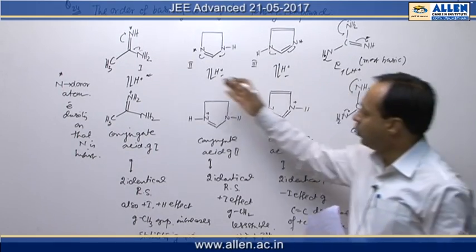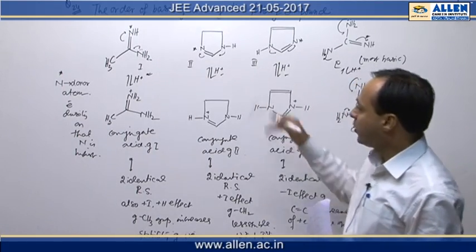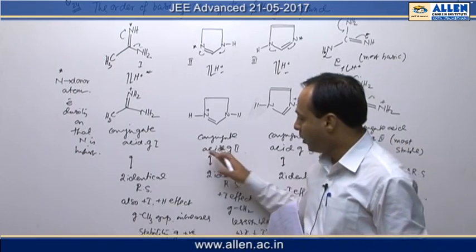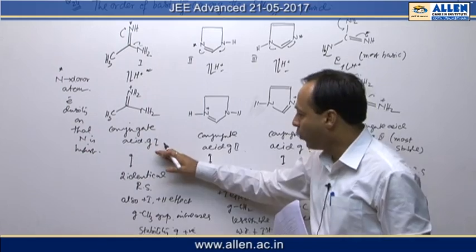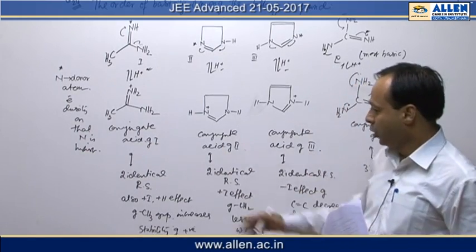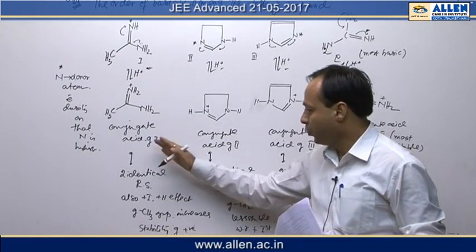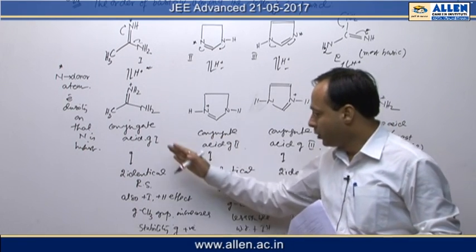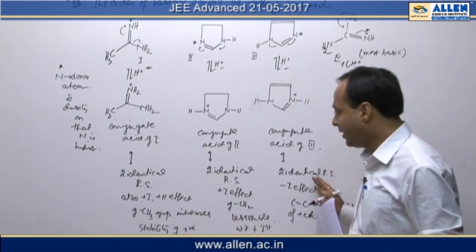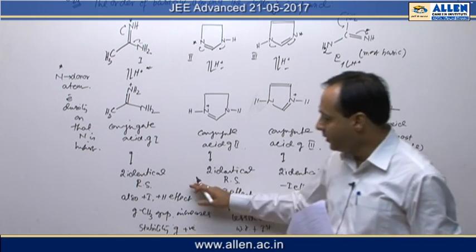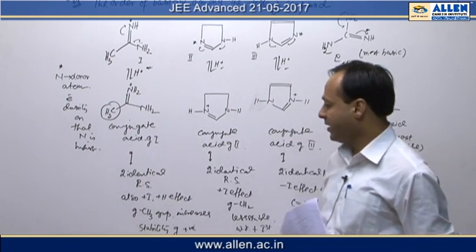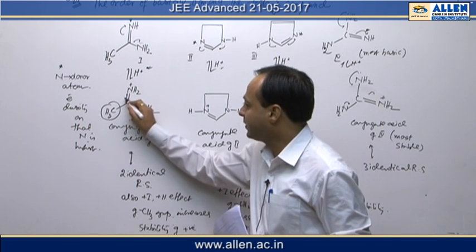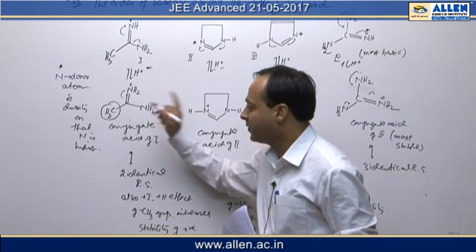Now 1, 2 and 3 when we are comparing the basic strength, again we are comparing the stability of conjugate acid of 1, 2 and 3. In all the cases, whether it is 1, whether it is 2 and whether it is 3, conjugate acid having two identical resonance structures. But here, methyl having plus I effect and plus H effect which increases the stability of that particular system.